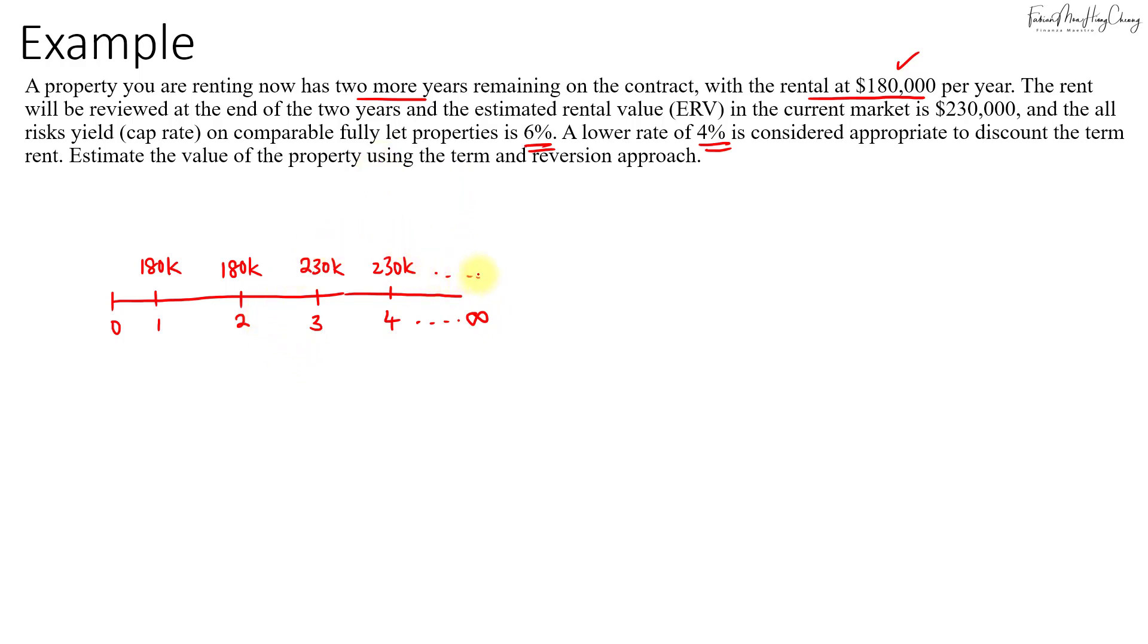In this case, we need to value this perpetuity here starting from year 3 onwards. We call this the reversion amount. Then the $180,000 currently is called the term rent. We need to PV these two using separate rates. For $180,000, the growth is zero as we can see here. It's level.